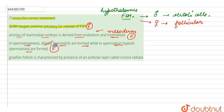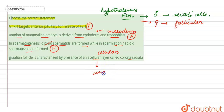The fourth statement says that the Graafian follicle is characterized by the presence of an acellular layer called the corona radiata. However, the corona radiata around the Graafian follicle is actually a cellular layer, not an acellular layer. When we refer to the acellular layer, that layer is the zona pellucida. So zona pellucida is the acellular layer here.